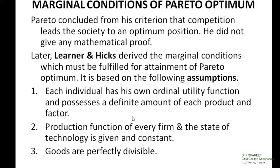Pareto concluded from his criterion that competition will lead the society into the optimum position, though he did not give any mathematical proof for that. Later, Lerner and Hicks derived the marginal conditions which must be fulfilled for the attainment of Pareto optimum level.